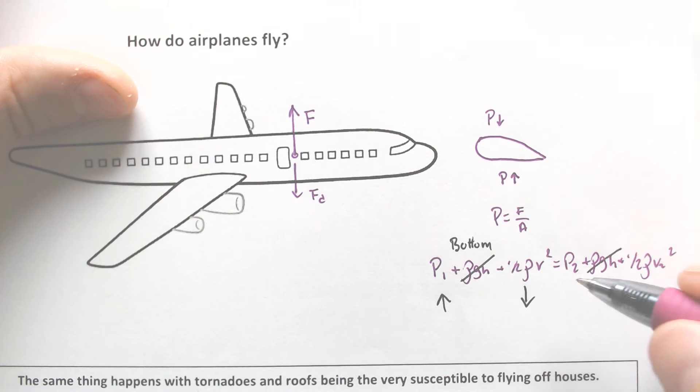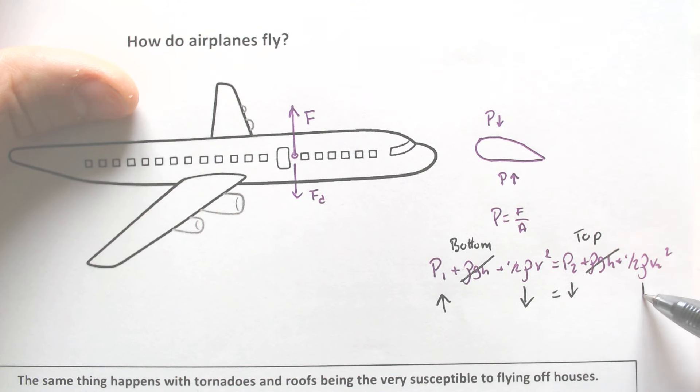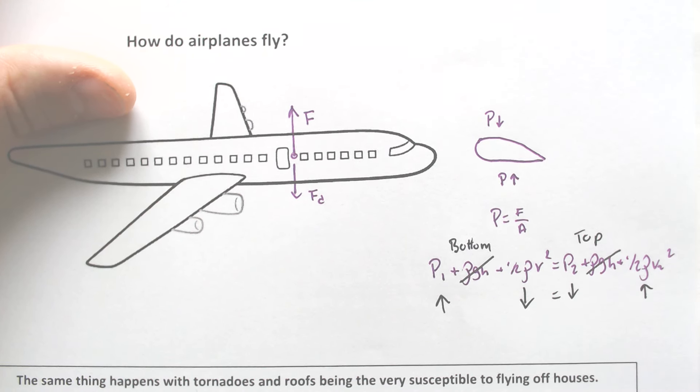And if this is the top of the wing, the pressure would have to be smaller, which means the velocity would have to be greater.